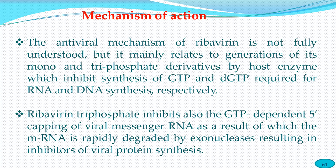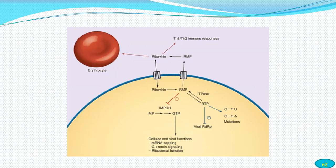Ribavirin triphosphate inhibits GTP-dependent 5'-capping of viral messenger RNA, resulting in rapid degradation of mRNA by exonucleases and inhibition of viral protein synthesis. It inhibits GTP and dGTP-dependent 5'-capping of viral mRNA, stopping viral RNA synthesis. Inside host cells, ribavirin is carried by erythrocytes and binds to mRNA capping, blocking G-protein signaling.